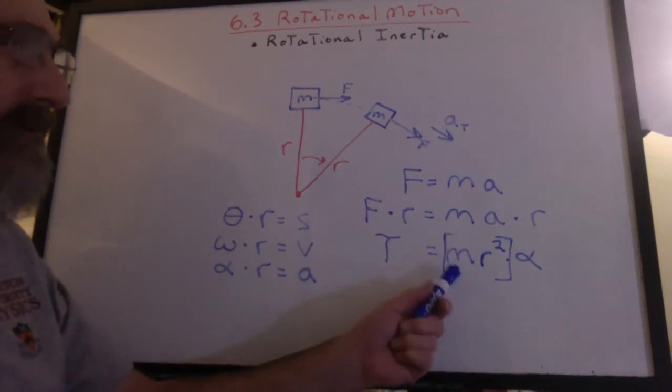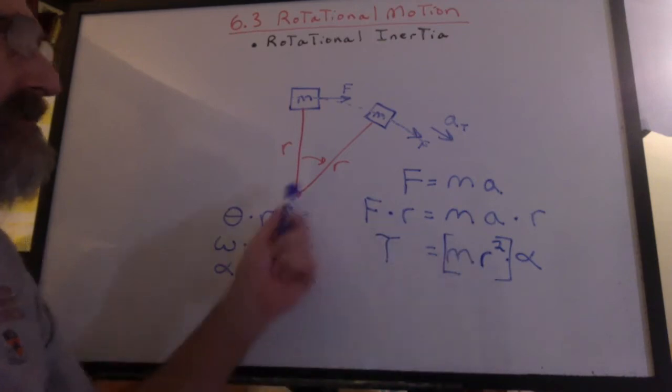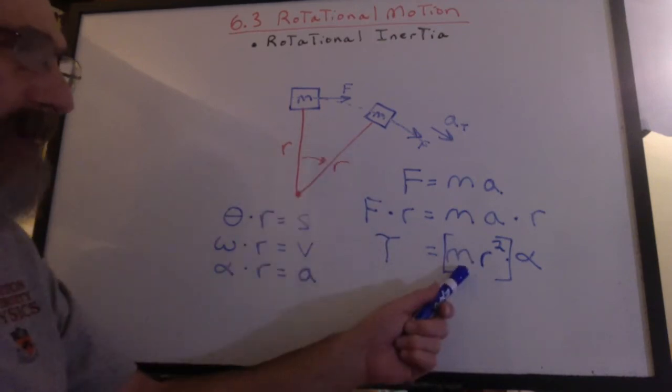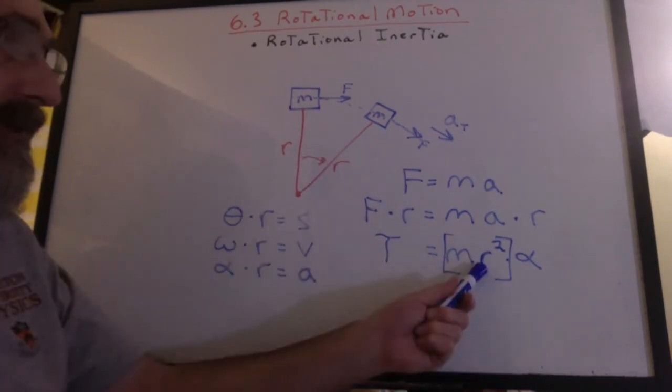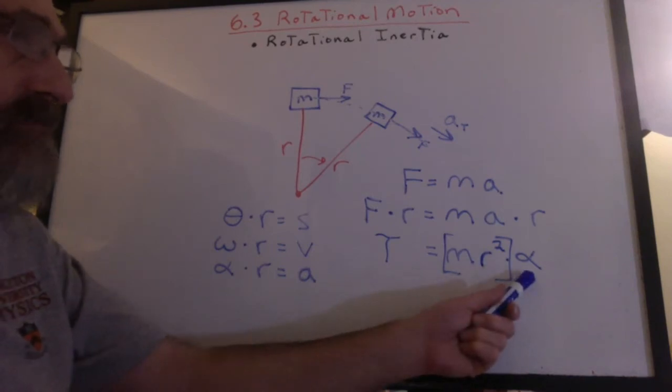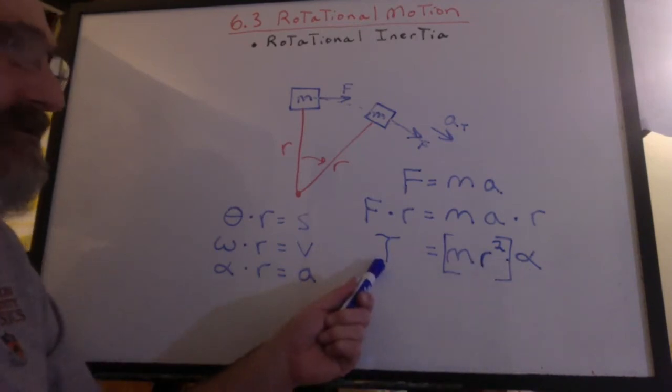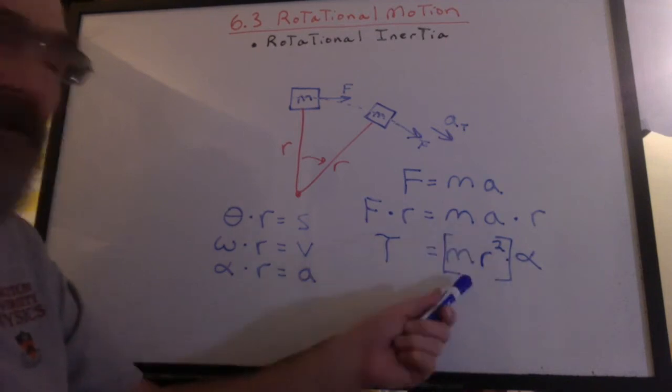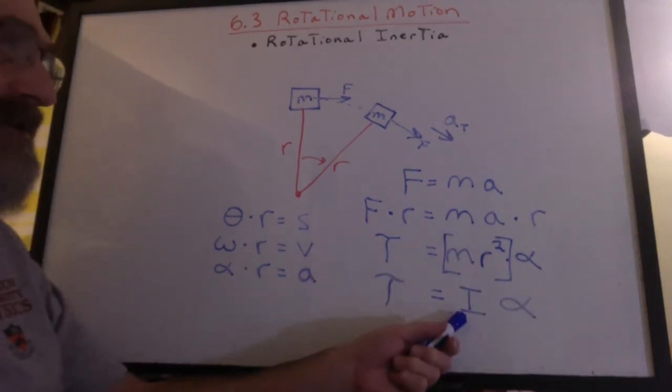Now this quantity is very important. It's the mass times the radius squared. It's based on the geometry of our system. The bigger the radius, the smaller the acceleration given a constant torque. Well, that sounds like inertia. It's the rotational inertia.